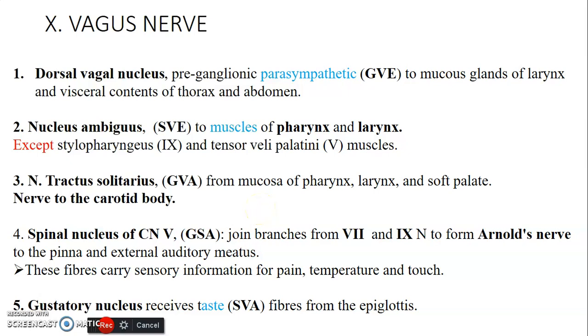Hello everyone, my name is Dr. Ominde and we continue with the series. We are almost at the cranial nerves. The 10th cranial nerve is the vagus nerve and it uses five nuclei.